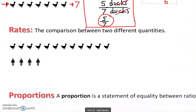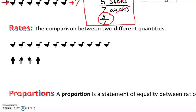Now let's take a look at rate. Rate is basically a comparison between two different quantities, or simply the quotient of two different quantities — it can be anything. We're going to work it out: how many duckies here versus how many persons are here.